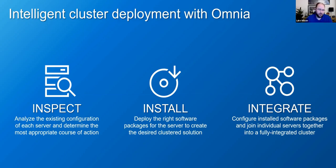Once we install all the software — which includes device drivers, workload management, and container runtimes — we go through the integration phase where we configure all that installed software and join all the individual servers in the software-defined cluster configuration together into a fully integrated cluster. We handle the generation of the Slurm config, the Kubernetes join to bring compute nodes into the manager node, and put all the necessary components on top — including services on the Kubernetes side.